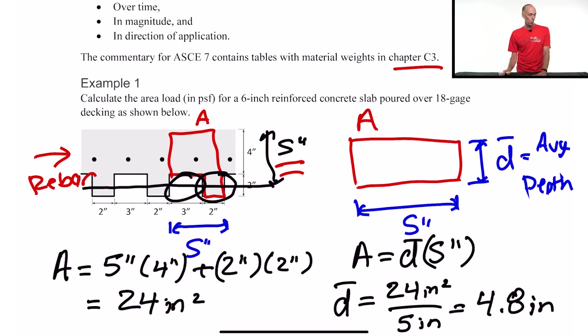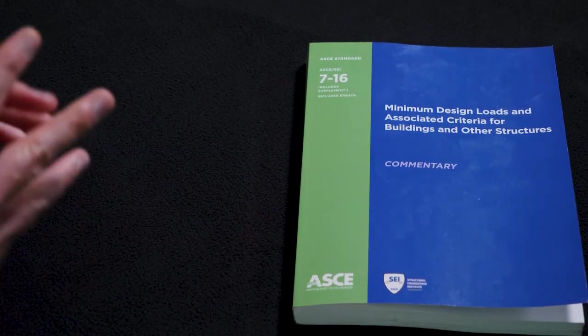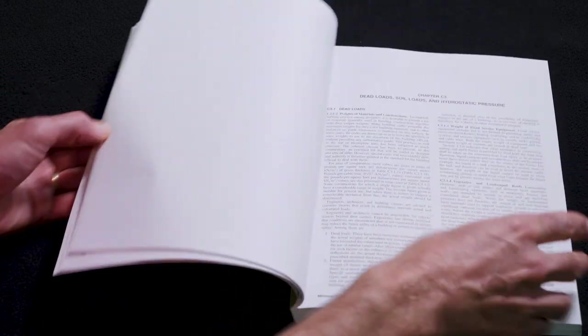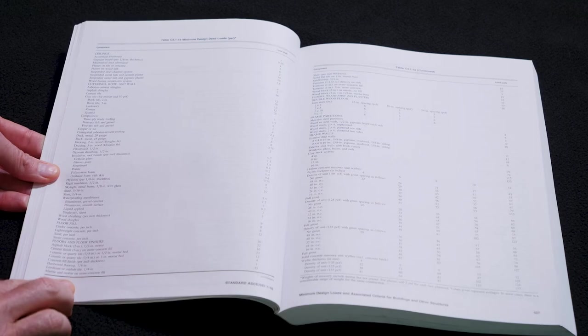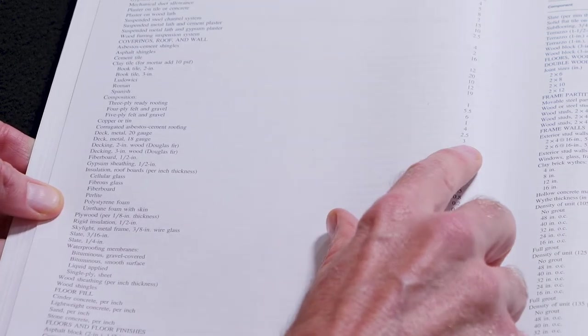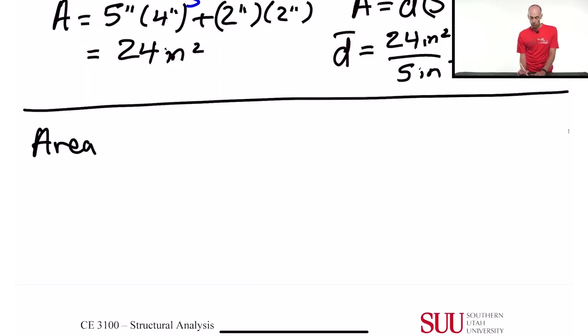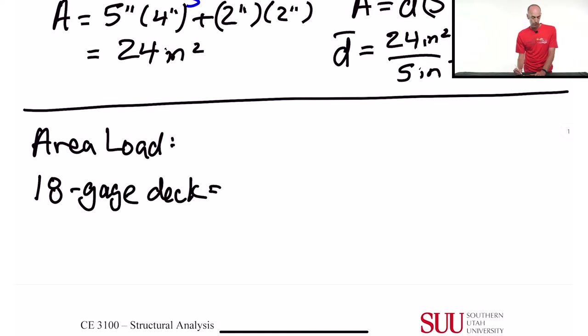Now we need to go into the table and figure out how much all this stuff weighs. I'm going to pull up the book and look at how much the decking weighs, then the reinforced concrete. Make sure you're looking at PSF. Coming down to metal deck entries, we're using 18-gauge decking — that's the second entry — and the 18-gauge decking is three pounds per square foot.